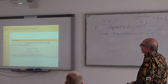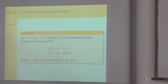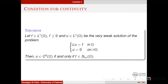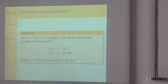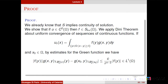This is now the result for continuity. This is the reverse result of the theory by Chiarenza, Frasca, and Longo, but as a premise, only for F non-negative. The condition this time is Stummel: if we have a continuous weak solution, then necessarily F belongs to the Stummel class S. Even here, the proof is not difficult. We assume U is continuous and apply the result about uniform convergence of a sequence, which is Dini's theorem.